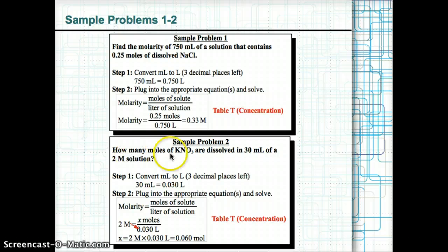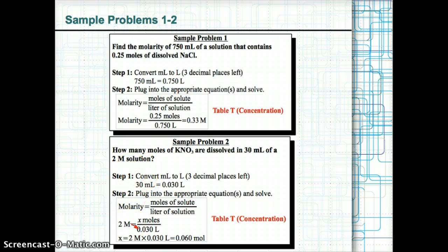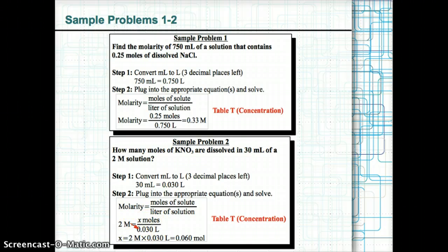Sample problem 2: Find the moles of KNO₃ dissolved in 30 ml of a 2 M solution. First, convert 30 ml to liters: 0.030 liters. Then plug into molarity = moles ÷ liters: 2 M = X mol ÷ 0.030 L. Cross-multiplying: X = 2 × 0.030 = 0.060 moles of KNO₃.